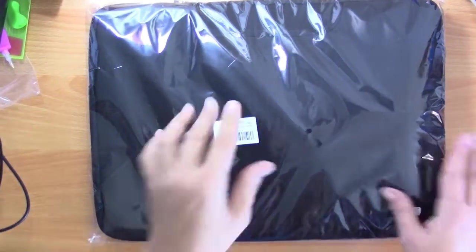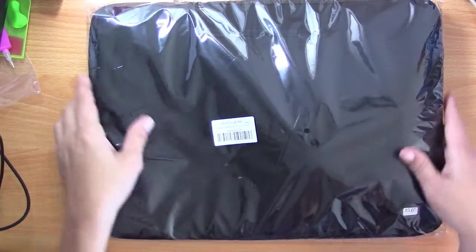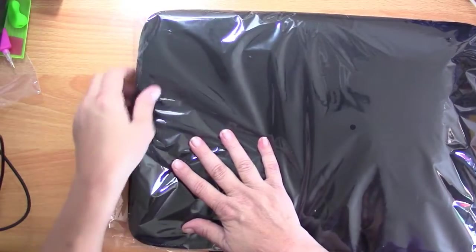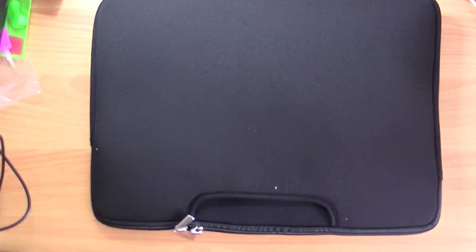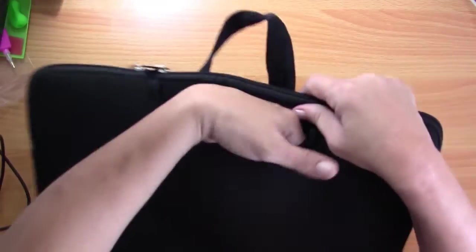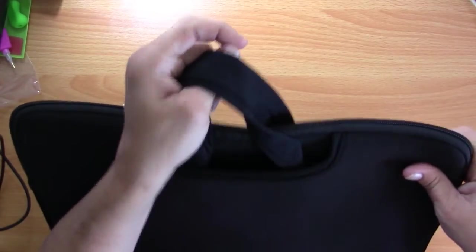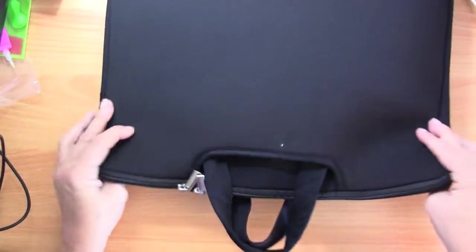This is a diamond painting light pad case, or just a light pad case. Let's open it up. Take a closer look. So we got some handles, which is nice if you want to go somewhere and take your diamond painting with you. Very nice. This is nice and padded. It's going to protect your light pad.